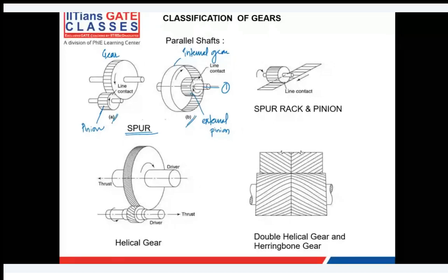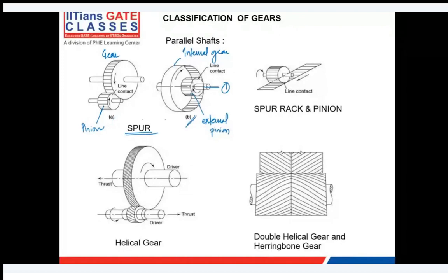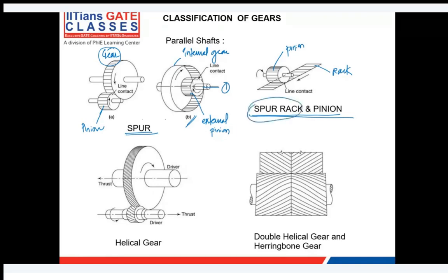If you make a gear with infinite radius, it looks like a rack and pinion. The rack is a gear with infinite radius, appearing as a straight line. A spur rack is like a spur gear with infinite radius.